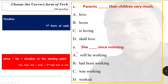Option number 2: she dash since morning. Available options are: will be working, had been working, was working, worked. Remember, when a sentence contains 'since' or 'for' — where 'for' is followed by a duration or 'since' introduces a starting point — has/have/had plus 'been' plus the fourth form (ing form) is used. Since a starting point is given here, 'had been working' is suitable. She had been working since morning.